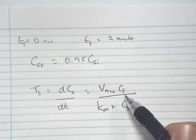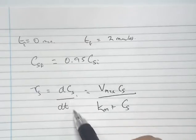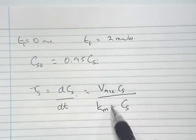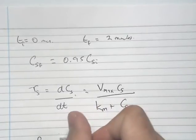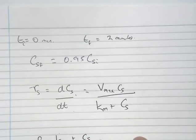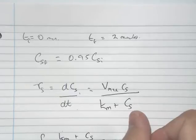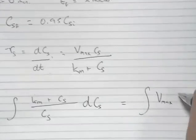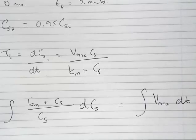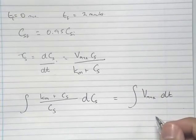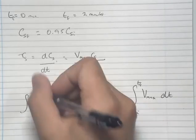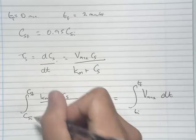We can rearrange this and integrate it in terms of concentration and time. Bringing terms across and integrating, we get the integral of (Km plus CS) over CS with respect to dCS, equal to the integral of Vmax with respect to dt. We apply limits Tf and Ti for time, and CSf and CSi for concentration.